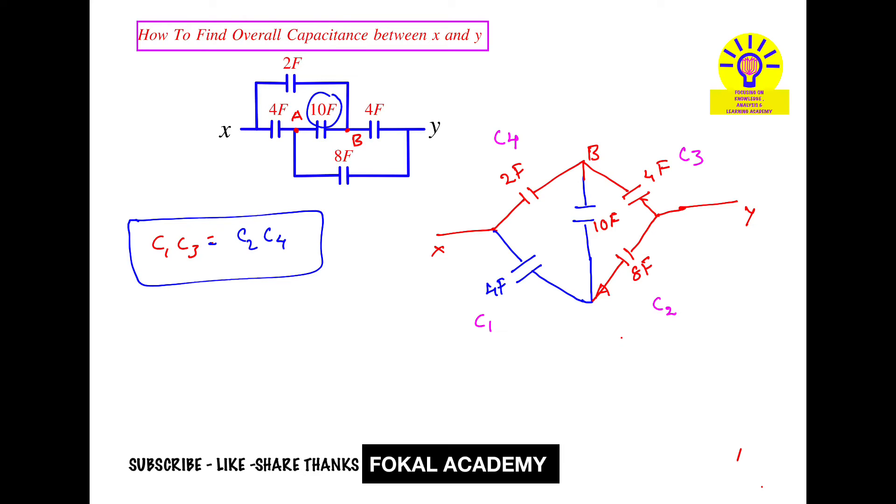Let's check here. C1 is 4 Faraday. So 4 into 4, that's equal to 8 into 2. So here 16, here also 16. So both are equal. So then this circuit is a balanced bridge circuit.